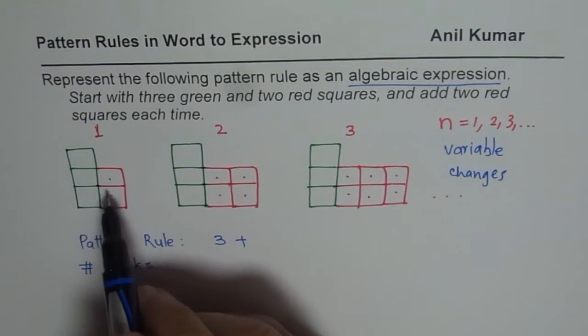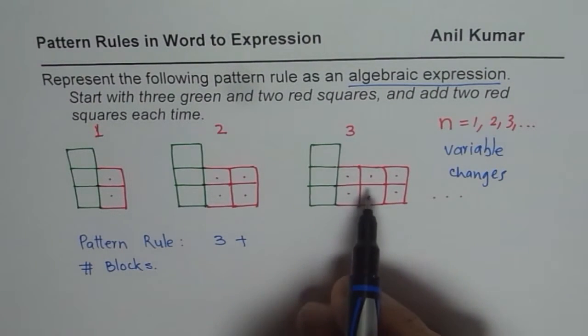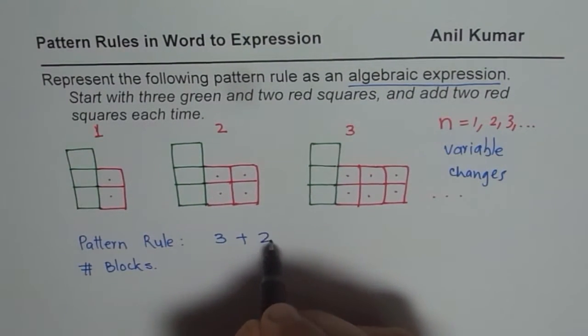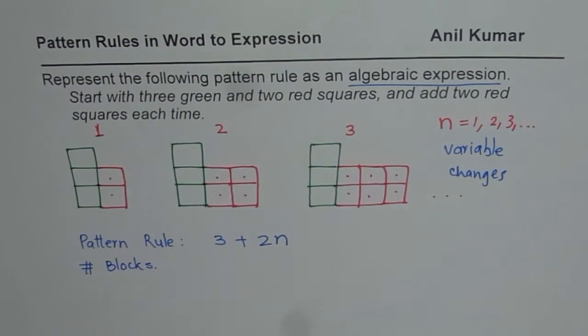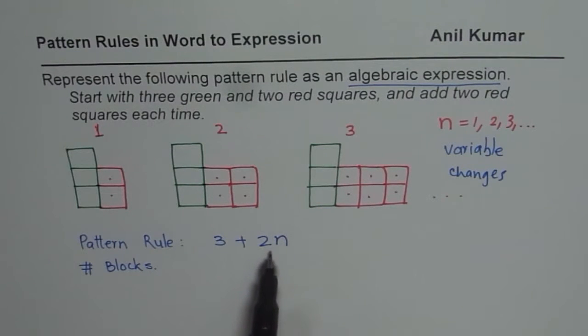And the red blocks, how are they related with the number? It is 2 times 1, 2 times 2, 2 times 3, correct? So we say 2n. Do you see that? 2 times n. n is the number here. So if I write 3 plus 2n, I know exactly how many blocks I have.